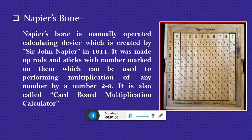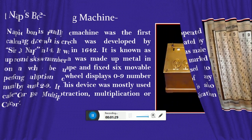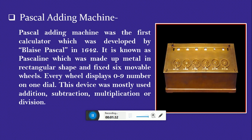The next device is Napier's Bones. Napier's Bones is a manually operated calculating device which was created by John Napier in 1614. It was made of rods and sticks with numbers marked on them, which can be used for performing multiplication of any number from two to nine. It is also called a cardboard multiplication calculator.